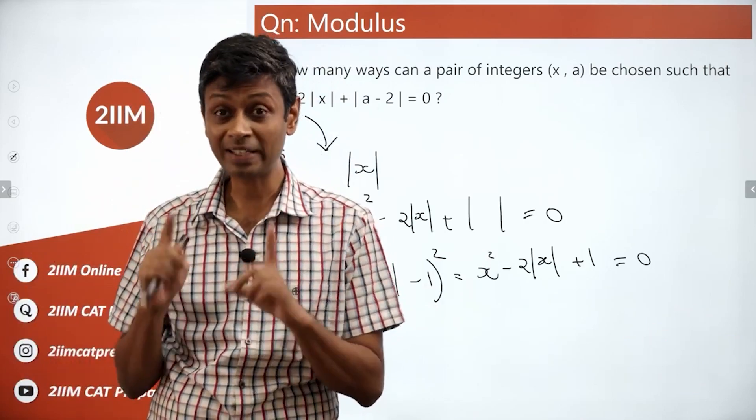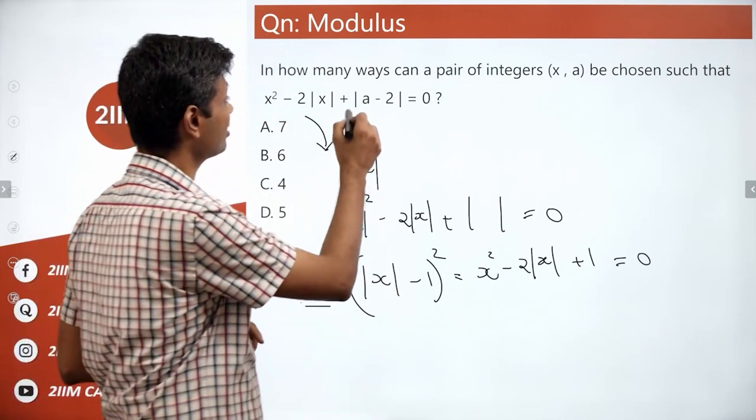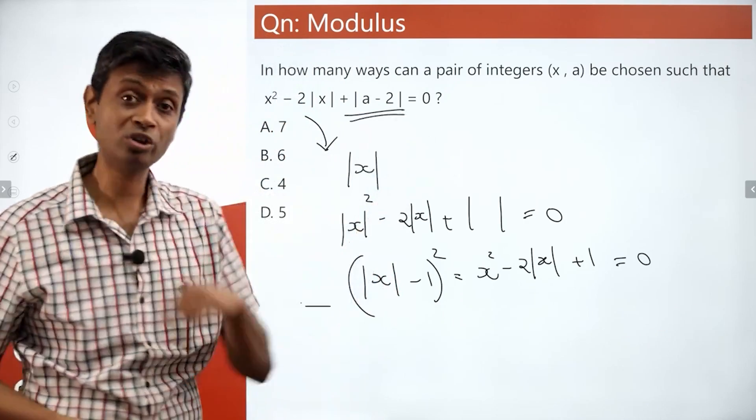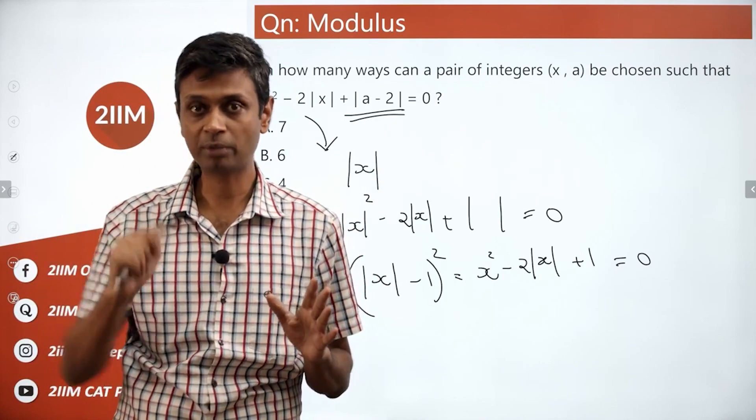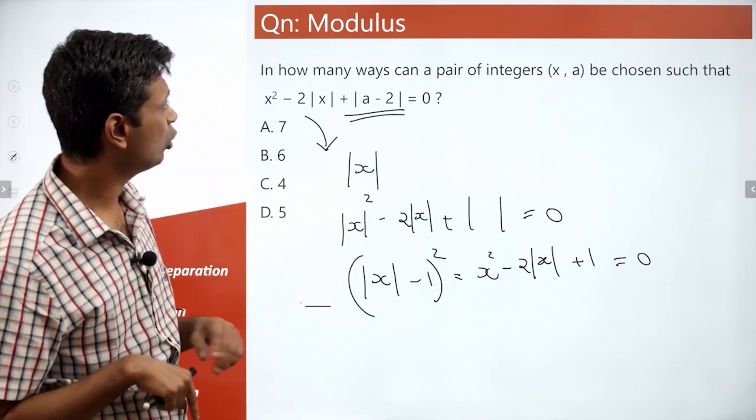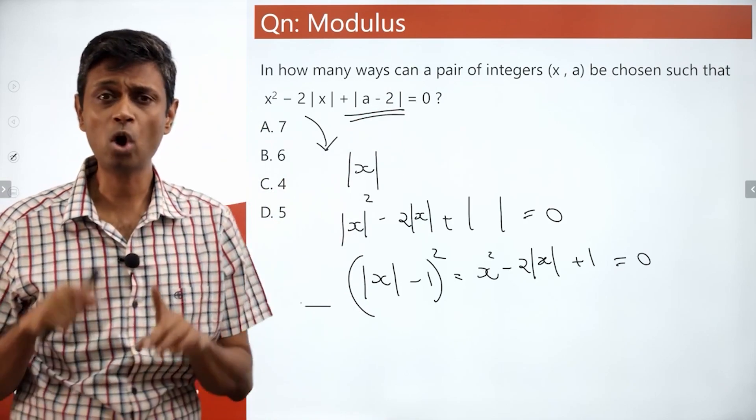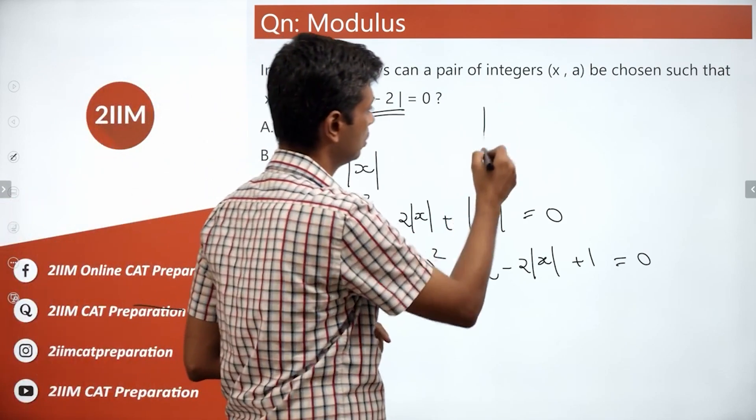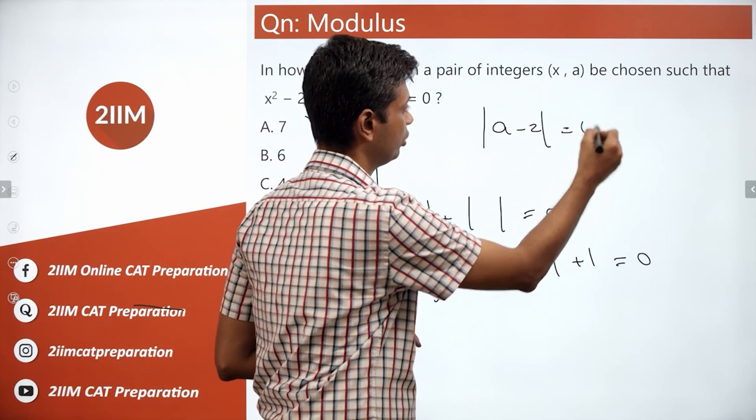So straight away we know that this constant term, if it were more than 1, we have no solution. We're talking about integers, so modulus of a minus 2 can be 0 or it can be 1. Nothing else is possible.